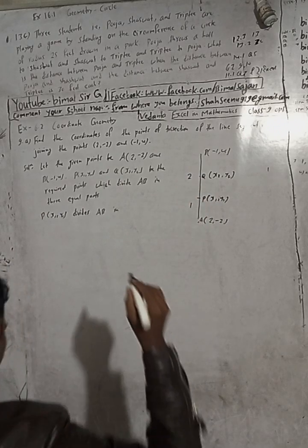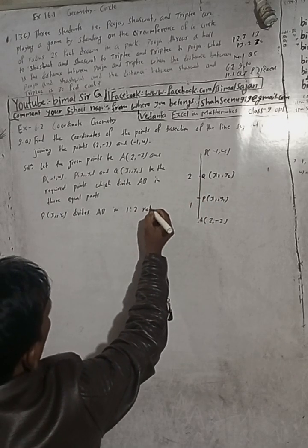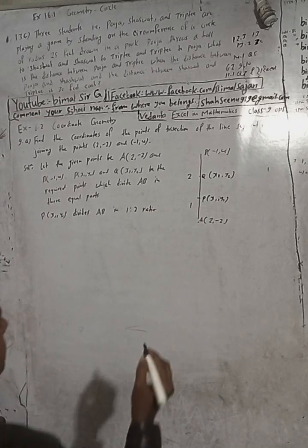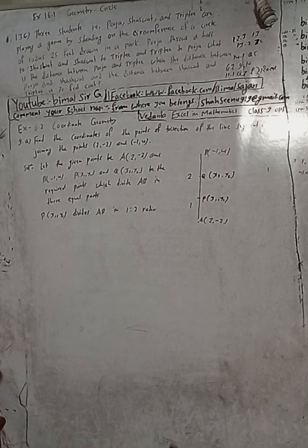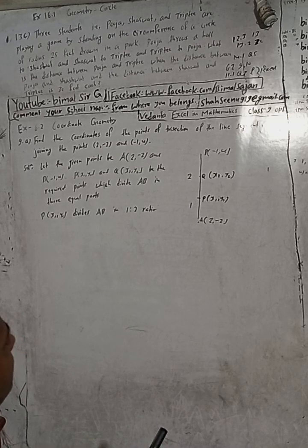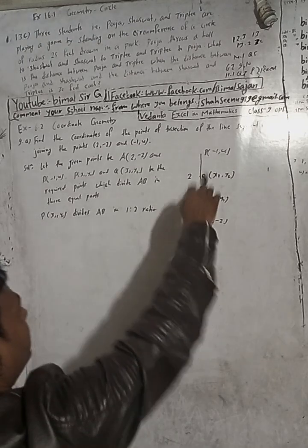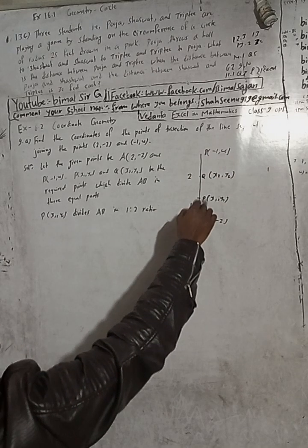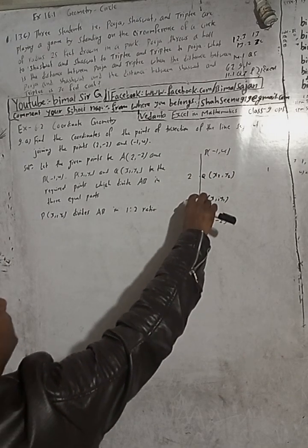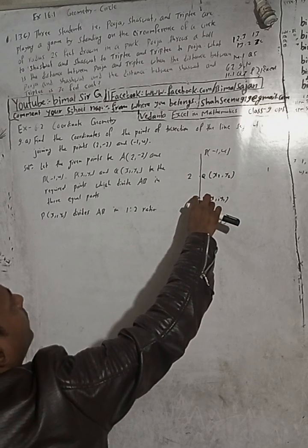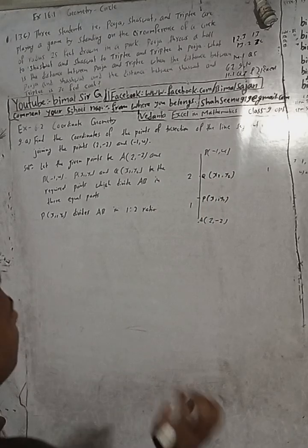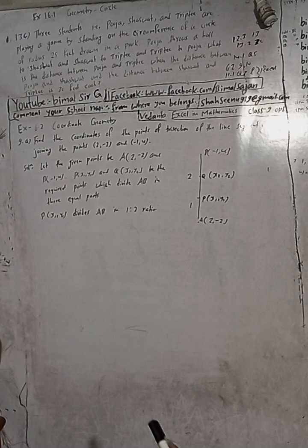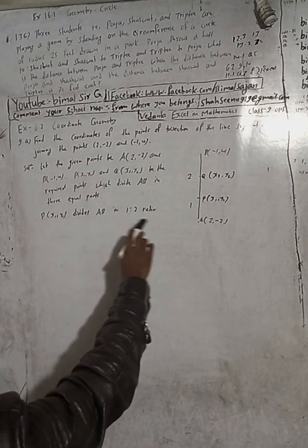One is to two ratio. P divides AB in the ratio one is to two, and Q divides AB in the ratio two is to one. Now, P(x1, y1) divides AB in one is to two.